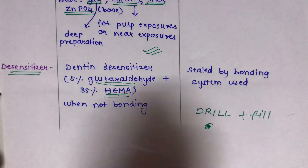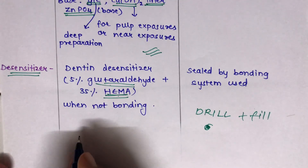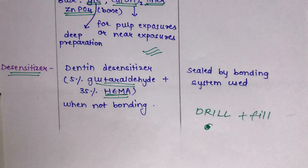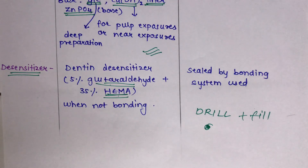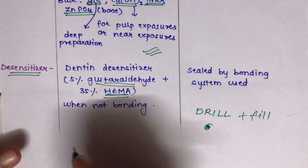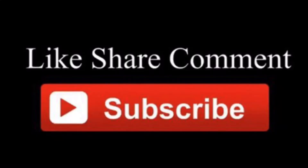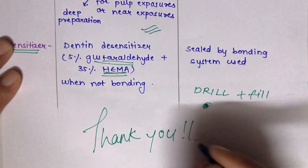To summarize: composite is based on the drill-and-fill principle — just remove the caries and fill with the material. Amalgam requires extensive, structured tooth preparation. This was all about the differences between amalgam versus composite tooth preparation. I hope you found this video helpful — please like, share with your friends, and subscribe to my channel. Thank you.